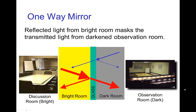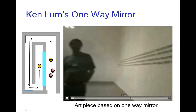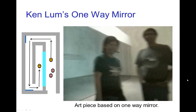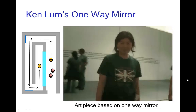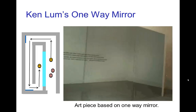We have a similar effect with a one-way mirror. You can have one room that is bright with a big piece of glass that appears as if it's a mirror, but on the other side you have a dark observation room. Here's an example of an art piece that uses this principle — we're in this room and we see what appears to be a large mirror on the wall.